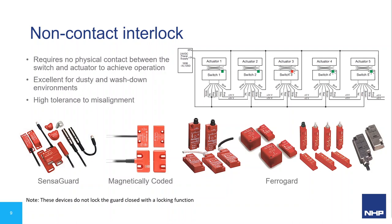The magnetically coded switches utilize reed contacts with a specially coated actuator, preventing defeat with a typical magnet because the actuator uses a specific series of north and south pole magnets unique to that switch. The Ferragard family of non-contact switches are a more traditional magnetic reed contact style without coated magnets. The Ferragard GD2 in particular is designed for the most arduous applications, featuring a full stainless steel housing for impact protection and the widest temperature range of any Ferragard switch: minus 25°C up to 125°C.